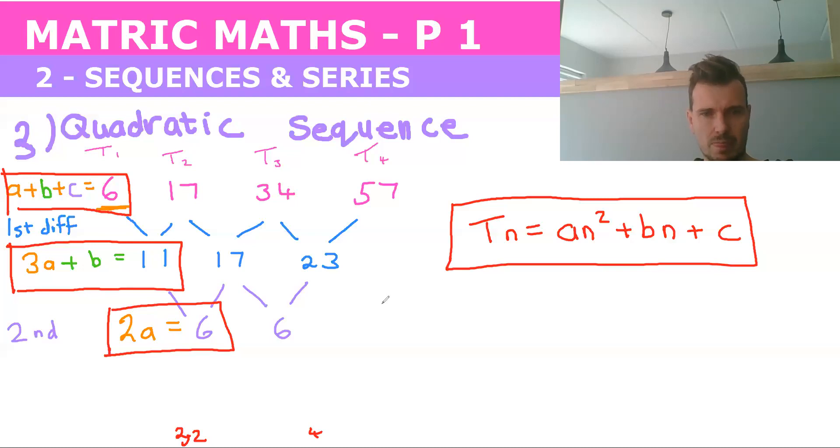So let's do the first one. So 2a equals 6. So a equals 3. Then you take that a and you put it into the next one. So 3 times the a that we calculated is 3 plus b equals 11. And so b equals 11 minus 9, which is 2.